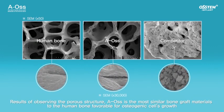The pore structure of Aeos is similar to the human trabecular bone. It is designed to play the role of an easy passage for the flow of body fluids, blood vessels, and cells. It also acts as support until new bone is regenerated.